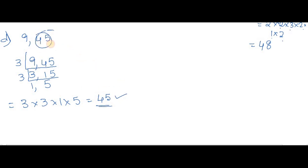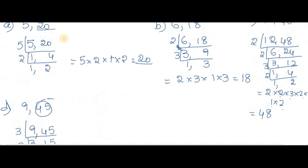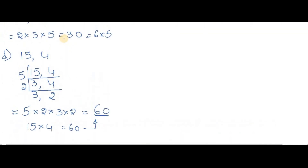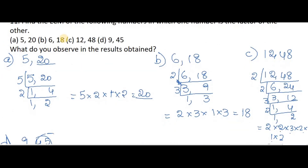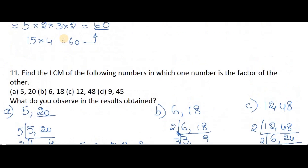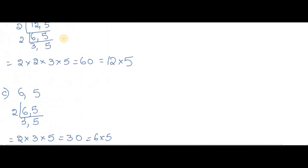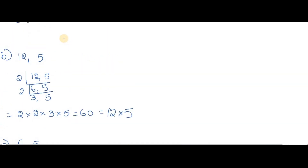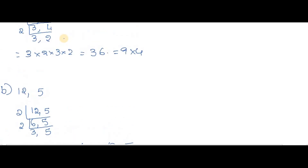If the first number is a factor of the second number, automatically the second number is going to become our LCM — that's what we observed here. And in the previous question, what we observed is: if the two numbers are not factors or multiples of each other, then we simply multiply those two numbers and that becomes our LCM. Now we will move on to the next question.